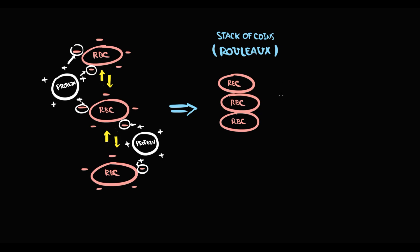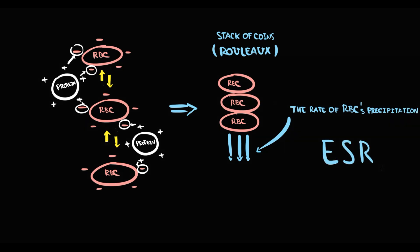And in form of aggregates, red blood cells precipitate, and the rate of red blood cells precipitation we call ESR. So because it's proteins that force red blood cells precipitation, increase in proteins concentration can cause increase in ESR.